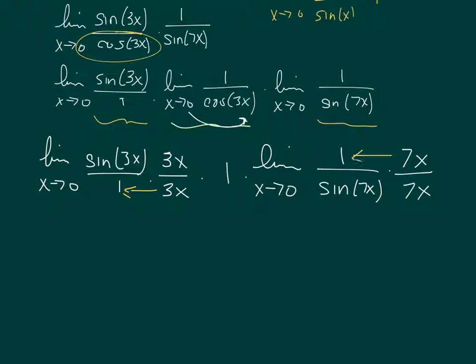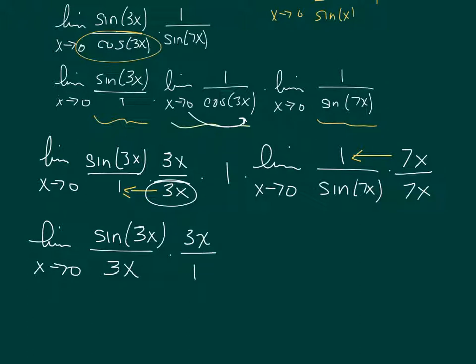And again, the reason I'm doing that is now that I put these together, I end up with sine of 3x over this 3x, so 1 times 3x. And I still have a 3x out there up top, so I'm not going to do anything with that. And you can put it over 1 again if you want. This 1 kind of went away.